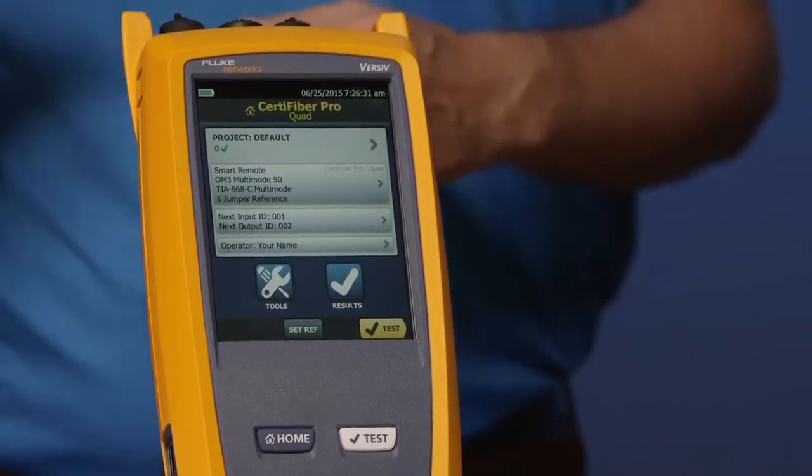Maybe one day it's in Edmonds, the next day it's in Mukilteo, and then it's downtown in Seattle. You can actually create three different setups, three different projects. So you can just hand that tester off to the next technician. Simply change the project and they're good to go.